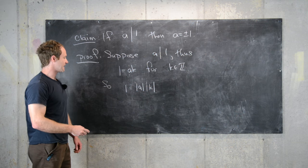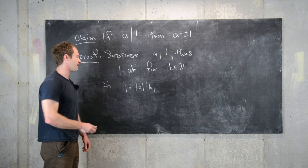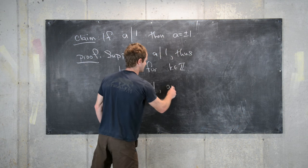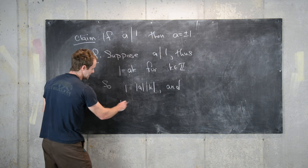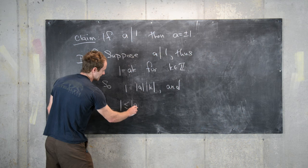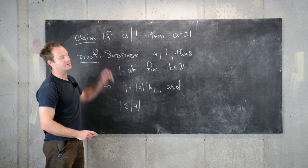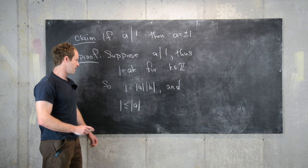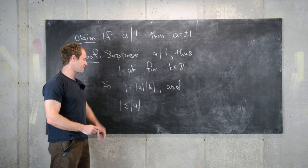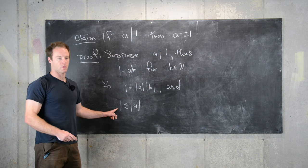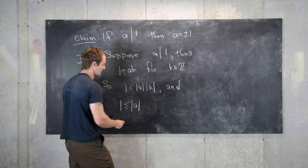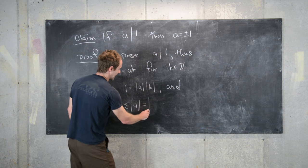And now that will build the following inequality. So 1 is less than or equal to the absolute value of a. That's true because we're assuming that a is an integer, the absolute value of any integer is bigger than or equal to 1. And then that is equal to the absolute value of 1 over K.